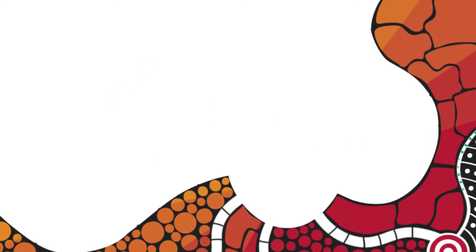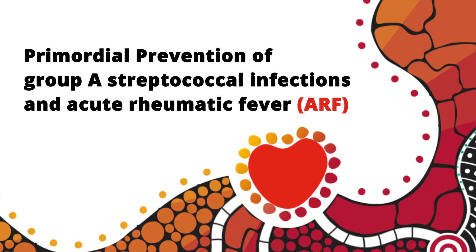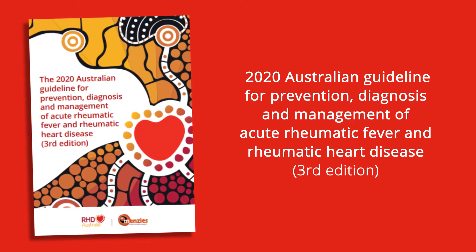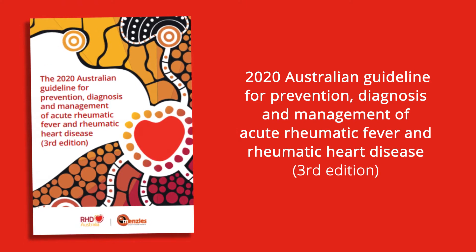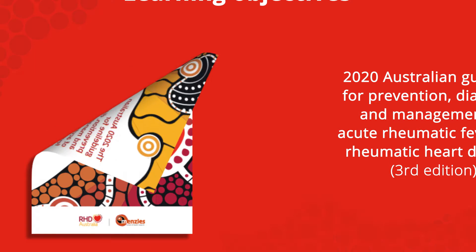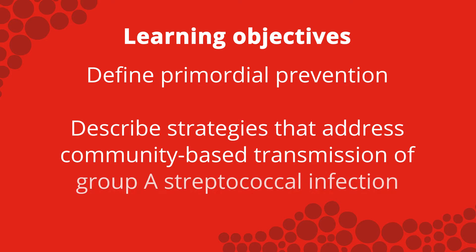This video is an introduction to Primordial Prevention of Group A Streptococcal Infections, which can cause acute rheumatic fever. Information is derived from the 2020 Australian Guideline for Prevention, Diagnosis and Management of Acute Rheumatic Fever and Rheumatic Heart Disease, Third Edition. The learning objectives are to define primordial prevention and describe strategies that address community-based transmission of Group A Streptococcal Infection.